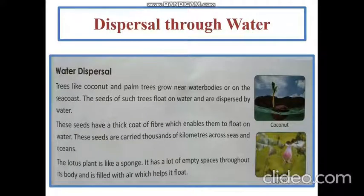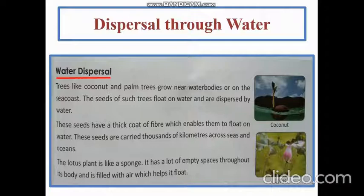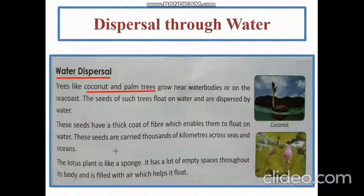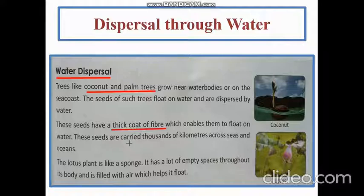Now we will learn about dispersal through water. Water is also an agent that helps in dispersal of seeds, like coconut and palm. Trees like coconut and palm grow near water bodies or on the sea coast. The seeds of such trees float on water and are dispersed by water. These seeds have a thick coat of fiber — you must have seen the fibrous outer coat of coconut. This thick coat enables them to float and be carried thousands of kilometers across seas and oceans.